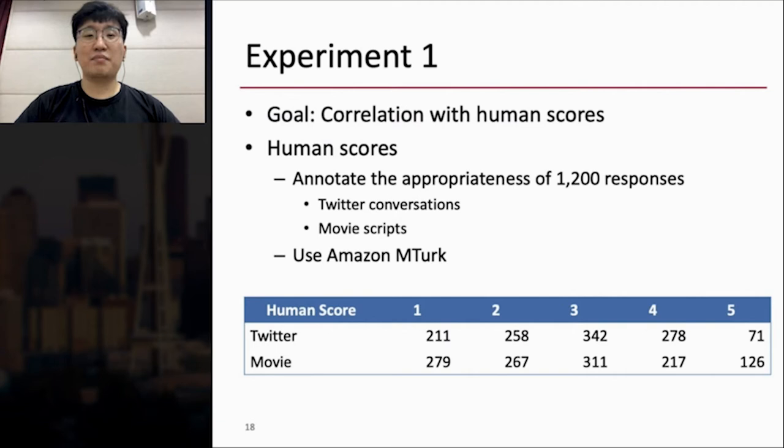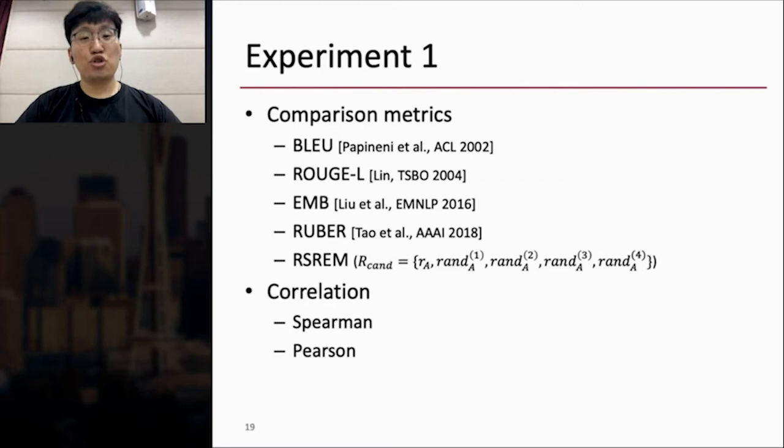Now I will explain the experiment. The goal of the first experiment is showing the correlation with human scores. I annotate the appropriateness of 1200 responses from Twitter conversations and movie scripts by using Amazon Mechanical Turk. And the bottom table shows the basic statistics of labeled responses. And I choose five metrics as baseline: BLEU, ROUGE, Embedding Average, RUBER, and RSREM. Actually, RSREM is the same as SSREM, except it uses all random utterances as the negative samples to train. And with RSREM, I can show the power of the speaker-sensitive examples, SC, SP, and SS. And I use the Spearman and Pearson correlations between human scores and the model scores.